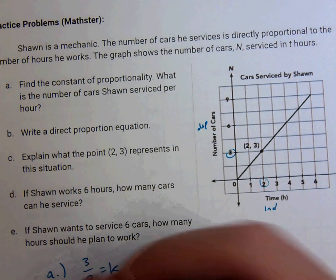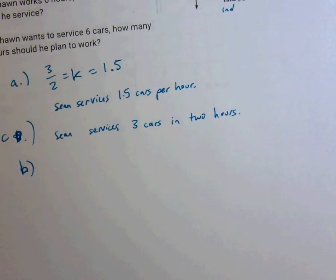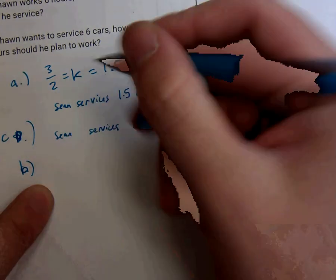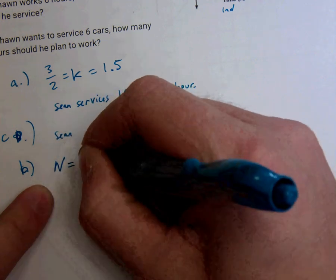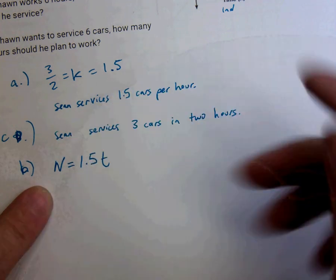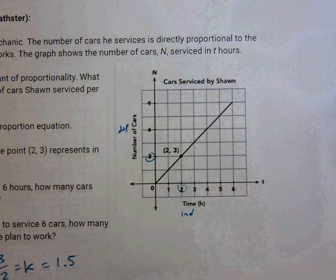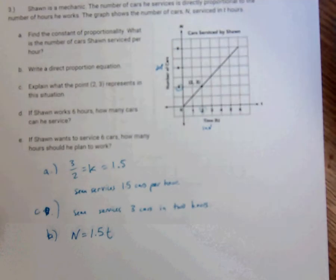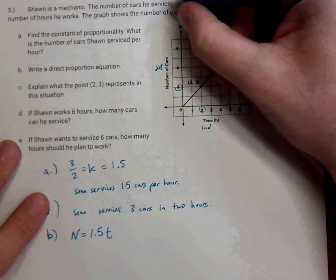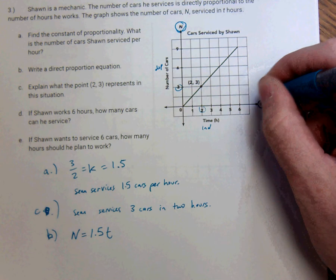This is C. Write the direct proportion equation. So, sorry, the direct proportion equation should have been N is equal to 1.5 T. Now, the reason it's N, it's going back to the graph. Maybe it wasn't good to zoom in. The reason that it's N is because that's what it's labeled as. If it was labeled as something else, I'd put something else there. But it's N is equal to 1.5 T.